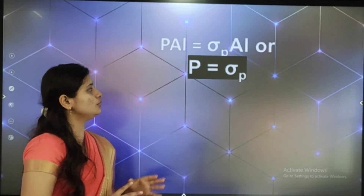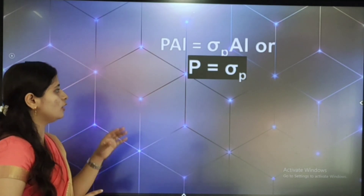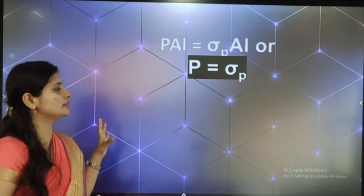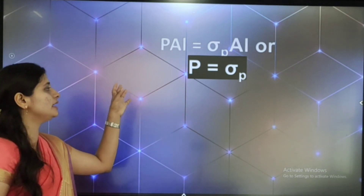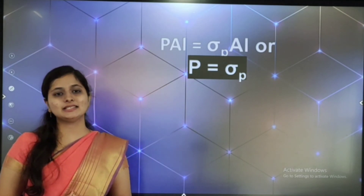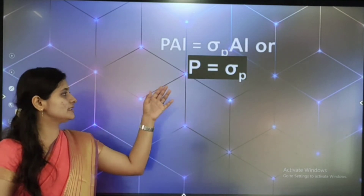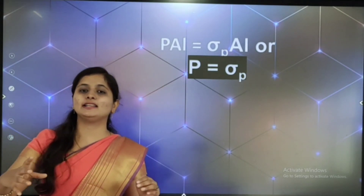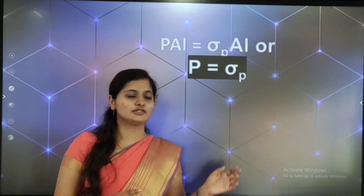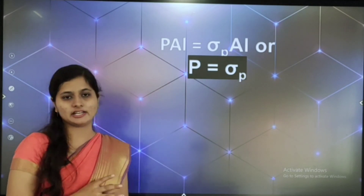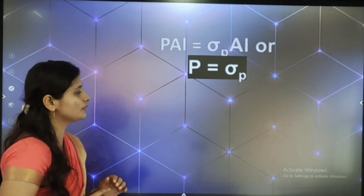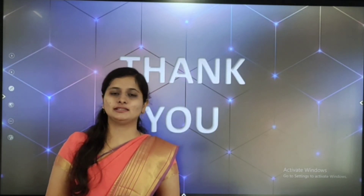Therefore P equals sigma-p. Here P is the polarization vector and sigma-p is the surface density of the polarization charges. So we have proved the relation between the polarization vector and the density of polarization charges. We will continue this in the next class. Thank you.